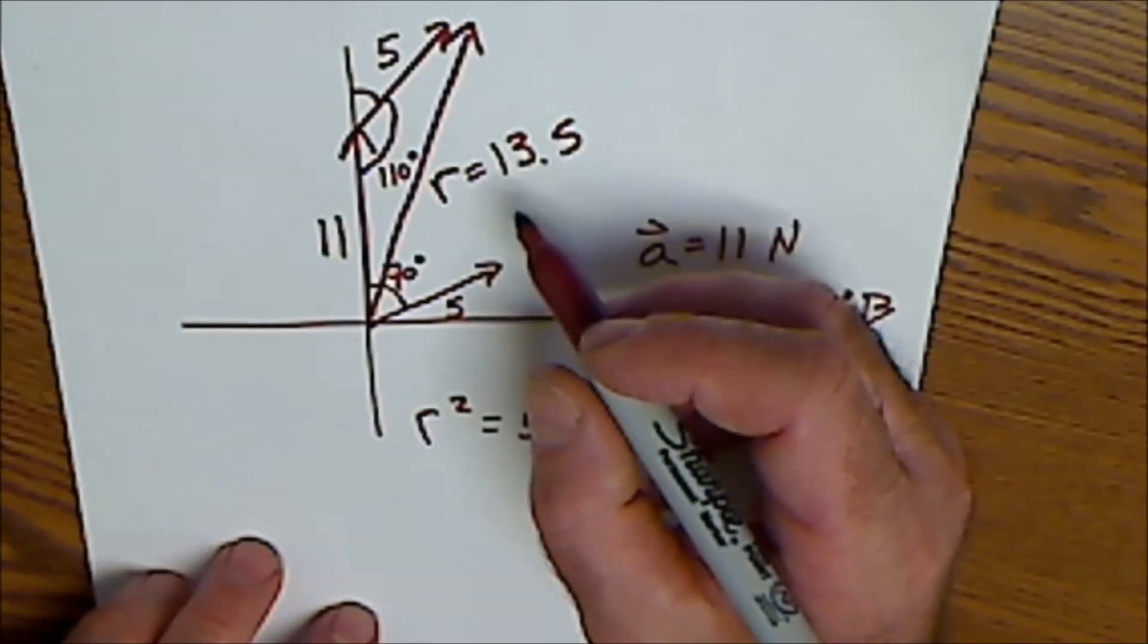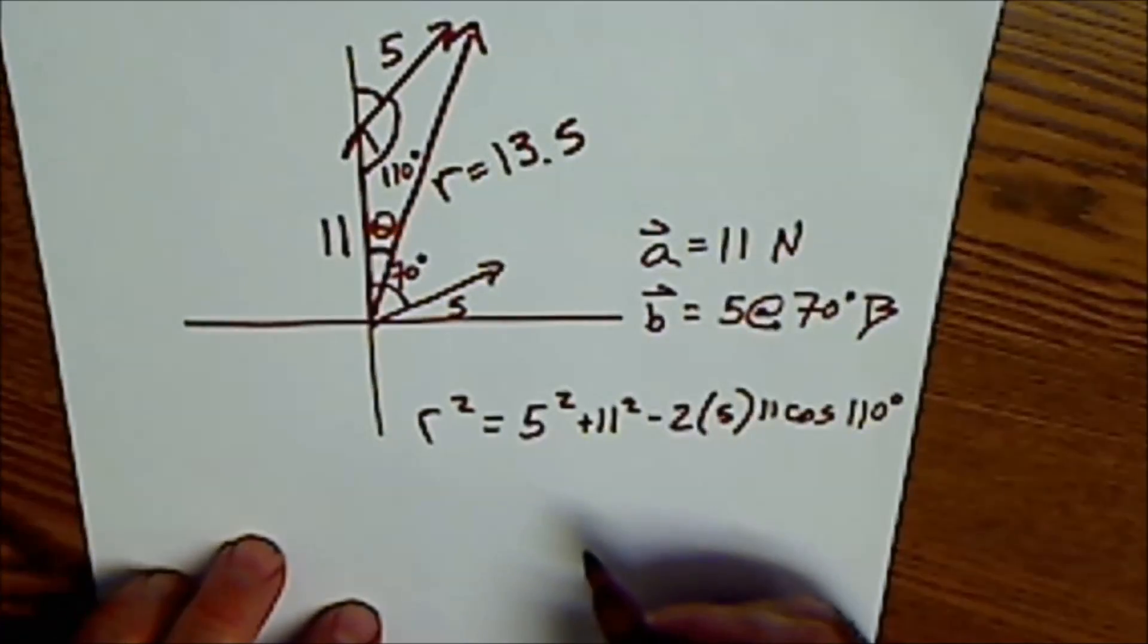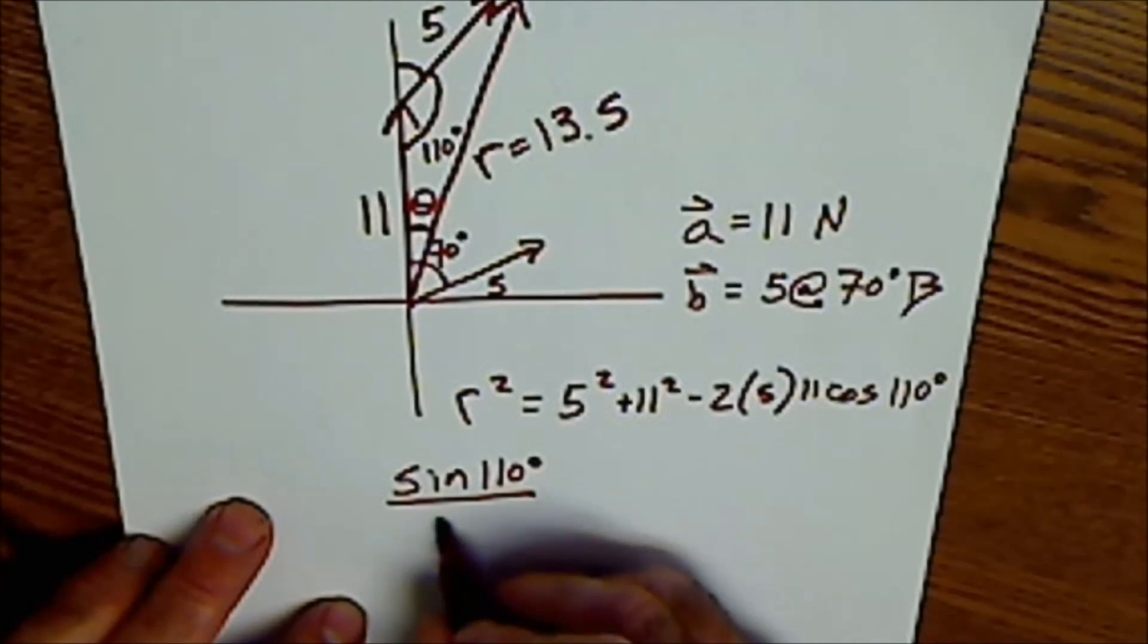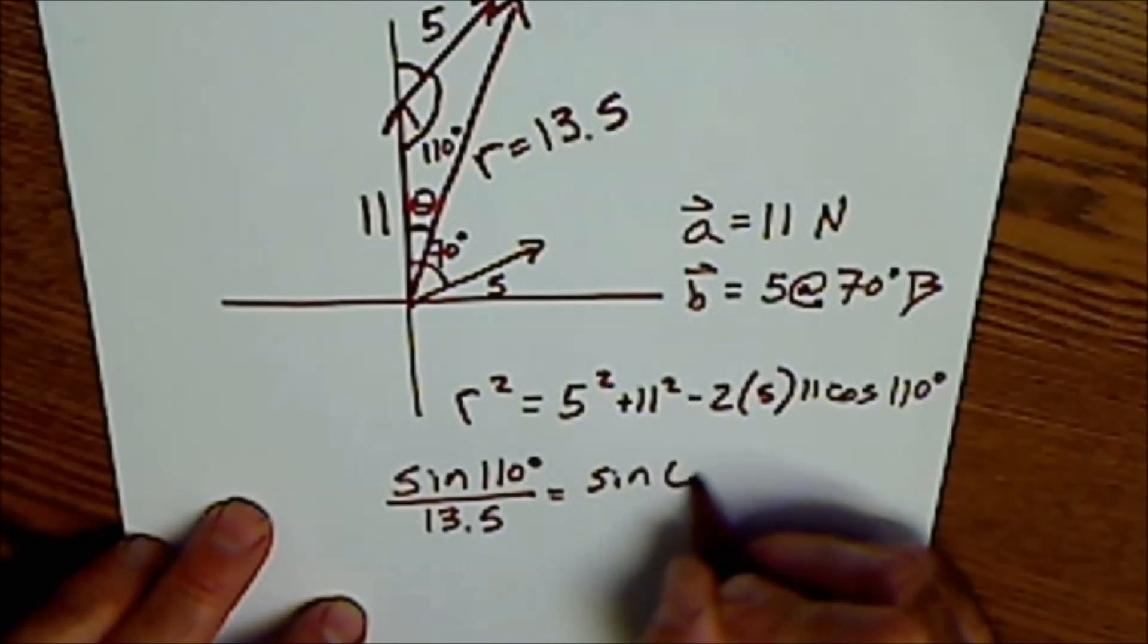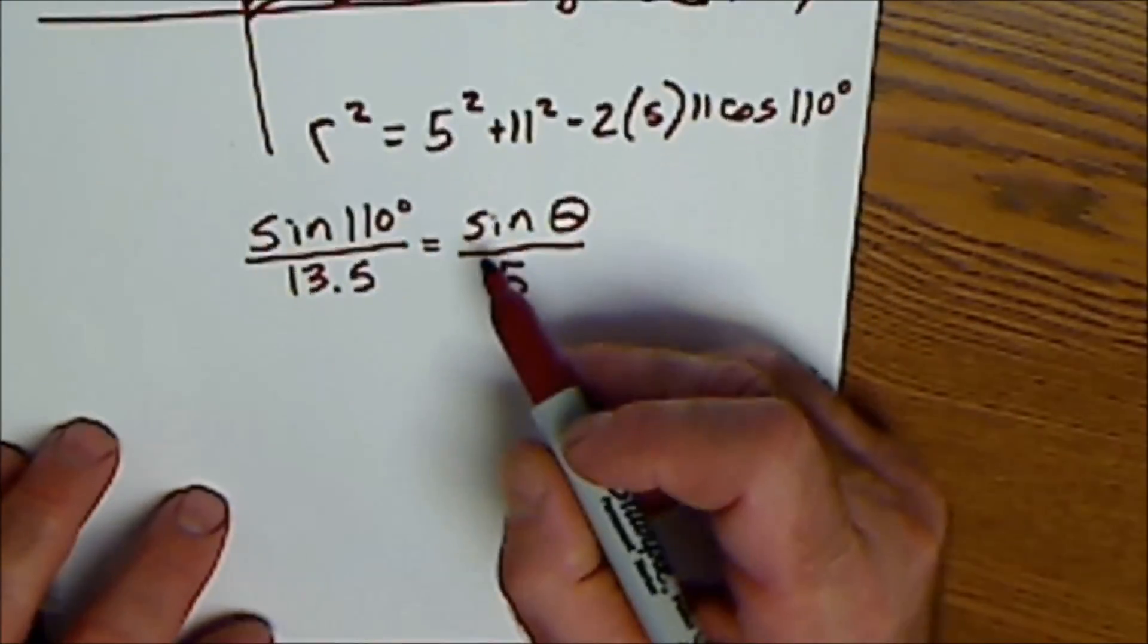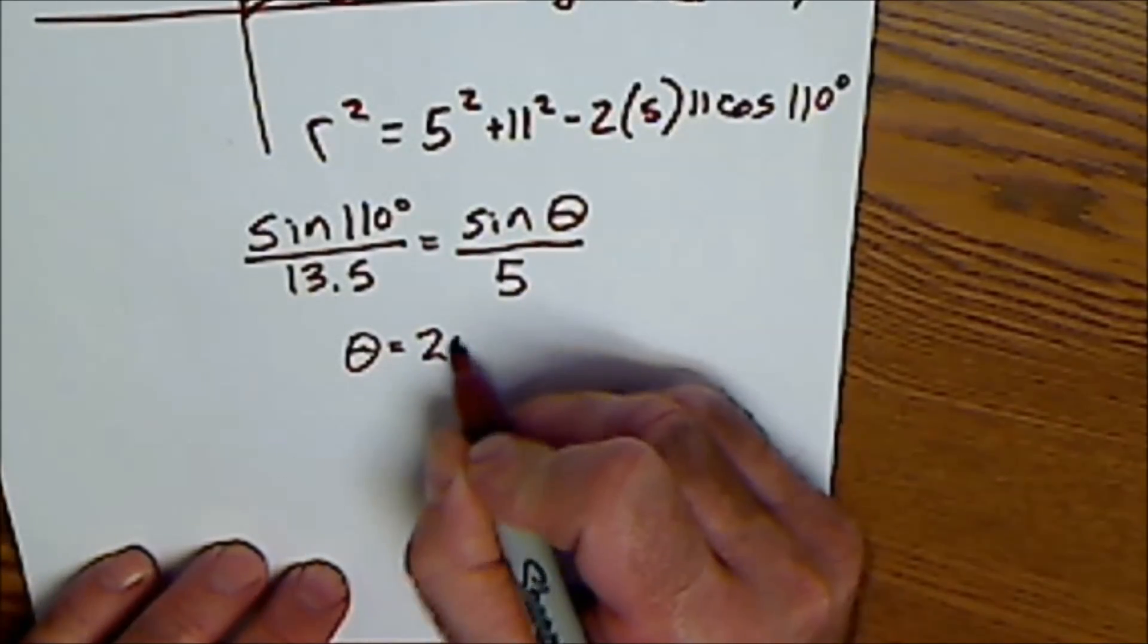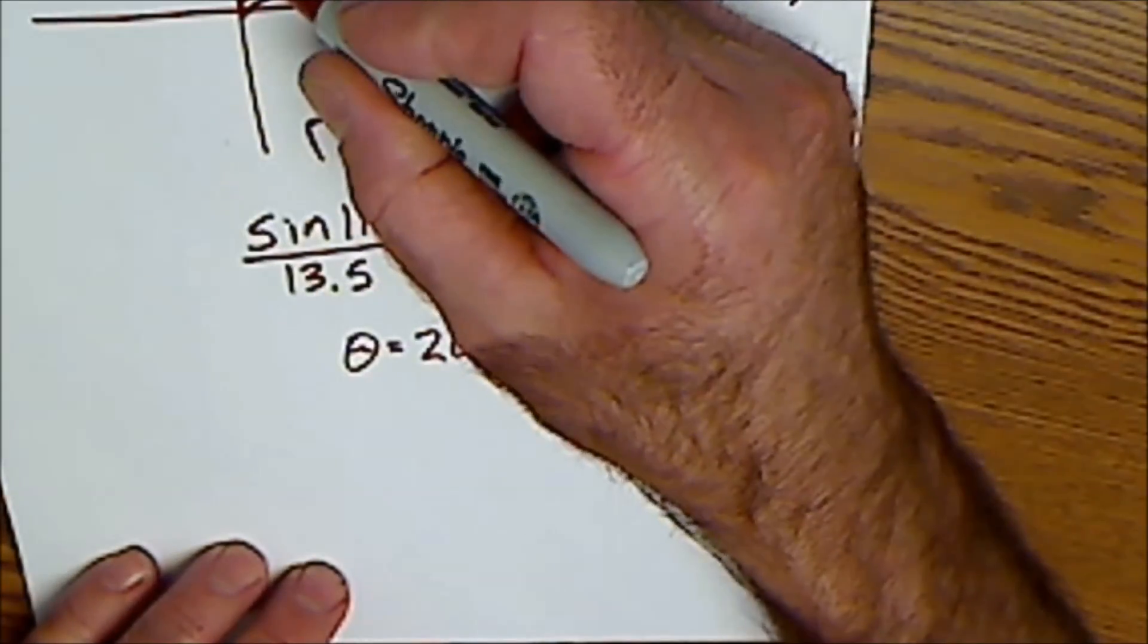It's still not a vector. I need to find an angle. So now I'm going to find this angle here. I'll call it theta. So I'm going to say sine of 110 degrees over the side opposite it, 13.5, is equal to sine of theta over the side opposite 5. One ratio equal to another proportion. I cross multiply. So I'm going to solve for theta here. And theta is equal to 20.4 degrees.